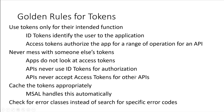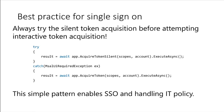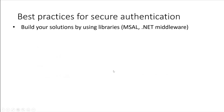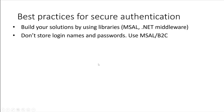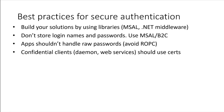Cache tokens appropriately using proper token caches for storing tokens — MSAL handles this automatically. It is always recommended to use MSAL or Microsoft Identity Web. Check error classes instead of searching for specific error codes. Best practice for single sign-on: always try to acquire the token silently before attempting interactive token acquisition — this is the simple pattern that enables SSO and handles IT policies. Best practices for secure authentication: build your solutions using libraries like MSAL and .NET middleware. Do not store login names and passwords. Apps shouldn't handle raw passwords — avoid the resource owner password credentials. Confidential clients like daemons and web services should use certificates, not client secrets.